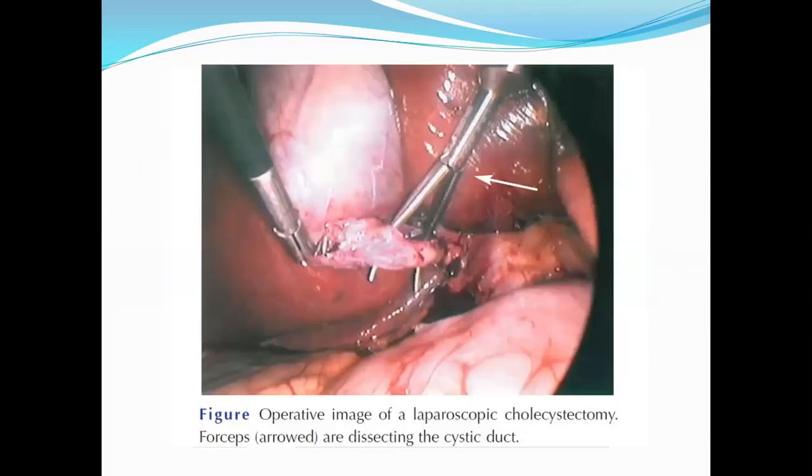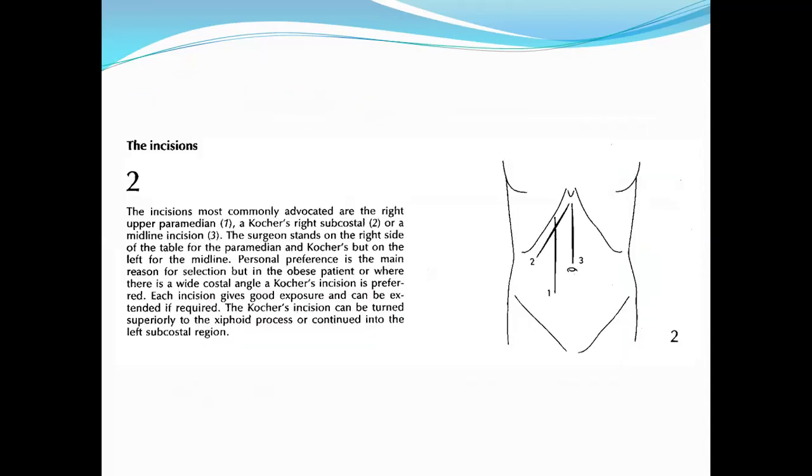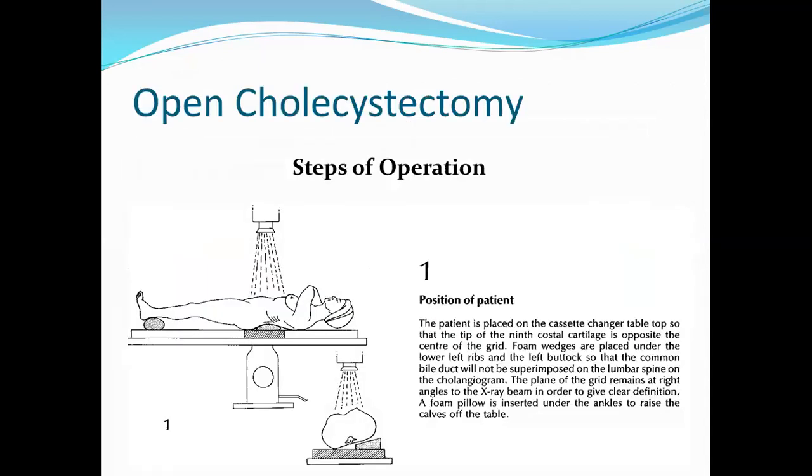There are two types of cholecystectomy: the open cholecystectomy and the more recent laparoscopic cholecystectomy. The steps are essentially similar. The position of the patient is the patient is placed on the cassette changer table top so that the tip of the ninth costal cartilage is opposite the center of the grid. Foam wedges are placed under the lower left ribs and the left buttock so that the common bile duct will not be superimposed on the lumbar spine on cholangiogram. The plane of the grid remains at right angles to the x-ray beam to give clear definition. A foam pillow is inserted under the ankles to raise the calves off the table.